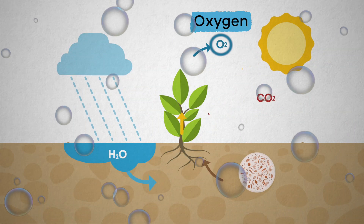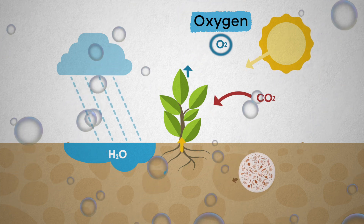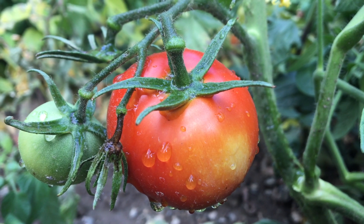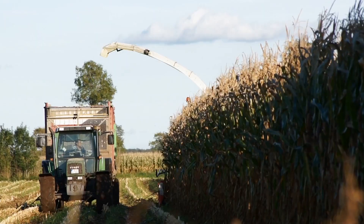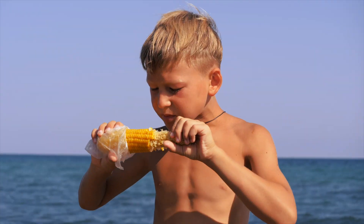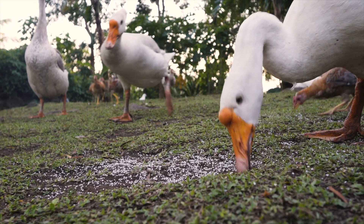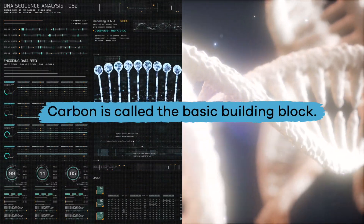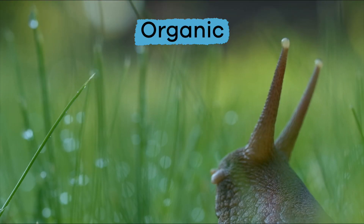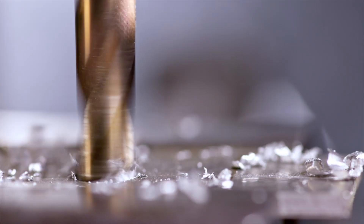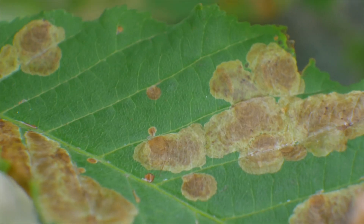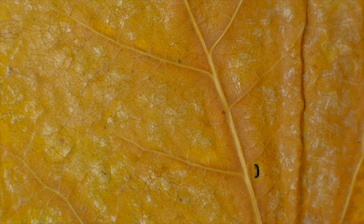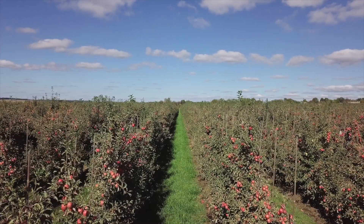When plants take in carbon and oxygen and combine them with energy from the sun, they can make their own food. This process is called photosynthesis. Since photosynthesis allows plants to create their own food, it also helps humans and animals who eat these nutritious plants and get energy from them. This is why carbon is called the basic building block of most living, or organic, and non-living, or inorganic, things.